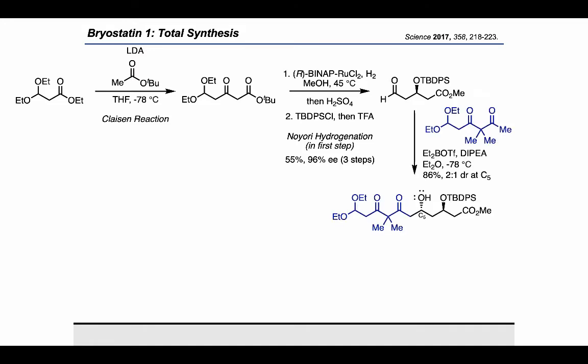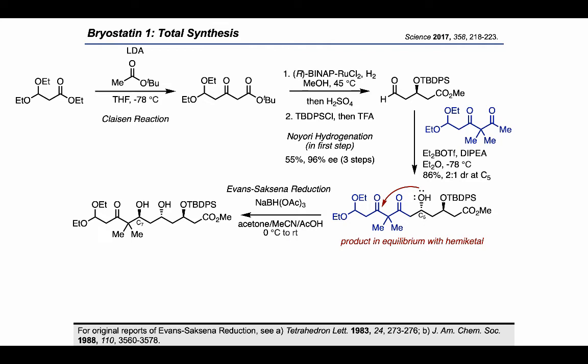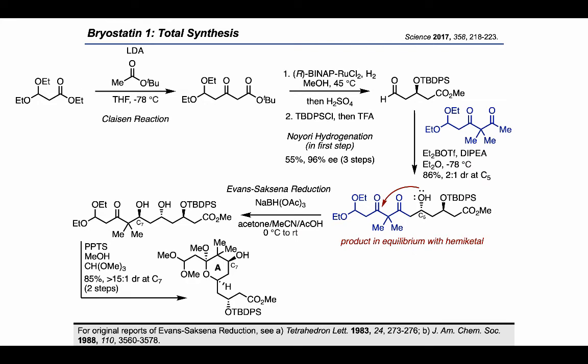Utilization of a boron enolate derived from a 1,3-diketone allowed an aldol reaction to proceed with 2-to-1 diastereoselectivity. This product existed as an equilibrium between the open-chain form and the cyclic hemiketal that can form from the alcohol closing down on the ketone. Using the Evans-Soxhna reduction, a further stereocenter was set diastereoselectively — the authors proposed that using acetone as solvent prevents intermolecular reduction and favors an intramolecular reduction mechanism, giving higher diastereoselectivity. Treatment with PPTS and trimethyl orthoformate resulted in ketal formation and closure of the A-ring.